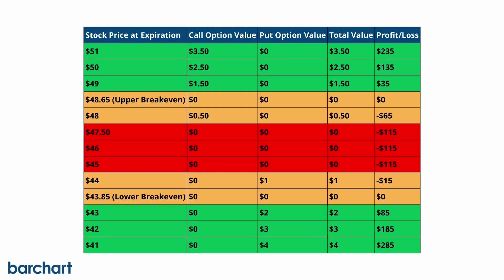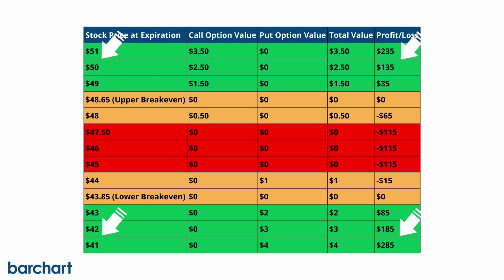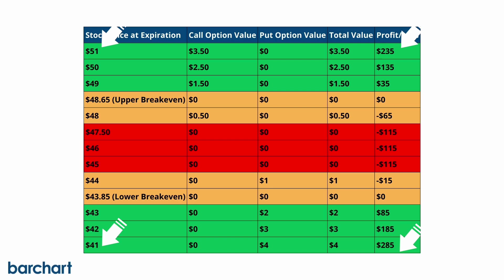For a better idea of how this particular long strangle trade might look, here's a table detailing the profit and loss scenarios across different price points. The maximum loss condition occurs between the $47.50 and $45 strike prices. Profits begin when the stock trades above the upper break-even price or below the lower break-even price, and the further the underlying price moves away from the break-even prices, the more profit you'll get.